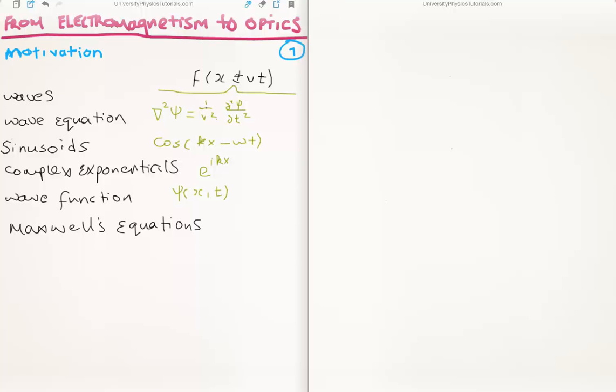I'll discuss that in video number two. We have, I'm going to discuss the wave equation, sinusoids, complex exponentials. Why do we use complex exponentials instead of the sinusoids themselves? And I'm going to discuss the wave function which is a solution to the wave equation.